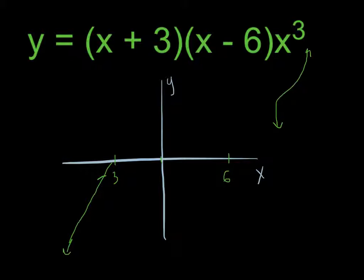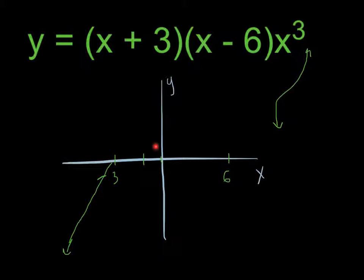How can we test that? We can make a test: let's plug in an x-value that is in between negative 3 and 0. If it's positive, then we'll know that it must go through negative 3 and then come back down. If it's negative, it would have to bounce back because it would have to stay negative.